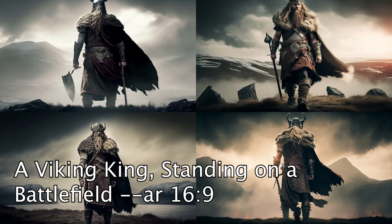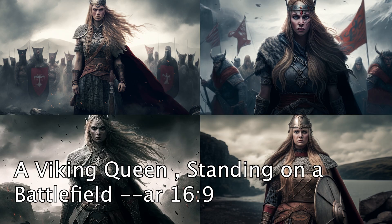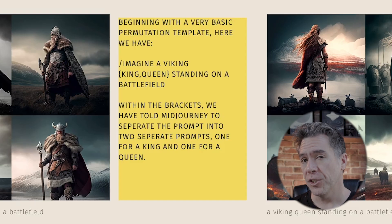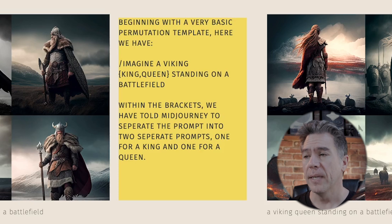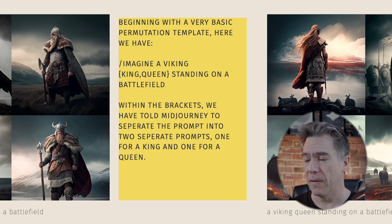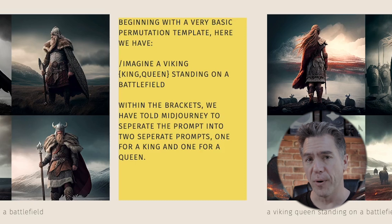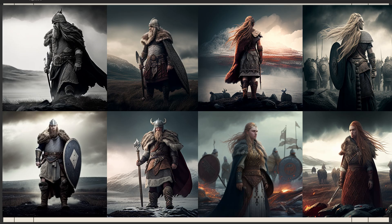Here are two prompts: 'a Viking king standing on a battlefield, AR 16:9' and 'a Viking queen standing on a battlefield, AR 16:9.' Permutations come into play when we run both of those prompts at the same time. In this case it would be: a Viking {king, queen} standing on a battlefield — and then running that one prompt outputs two separate images.